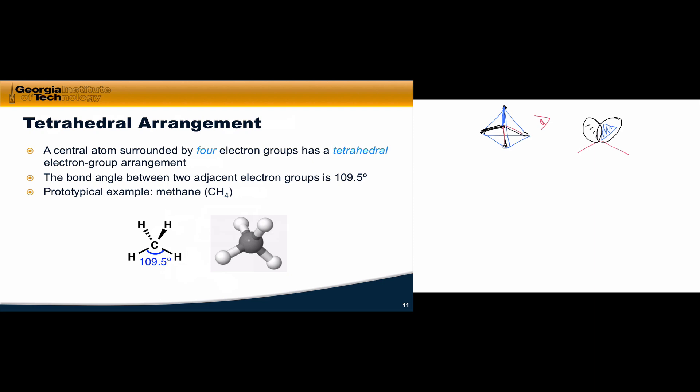The prototypical example that nicely illustrates the tetrahedral geometry is methane, CH₄. The bond angle between all electron groups within the tetrahedral arrangement is 109.5 degrees, so all bond angles are equal to this single value of 109.5 degrees.